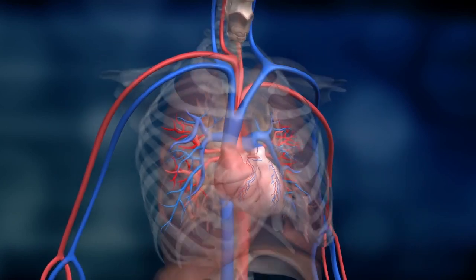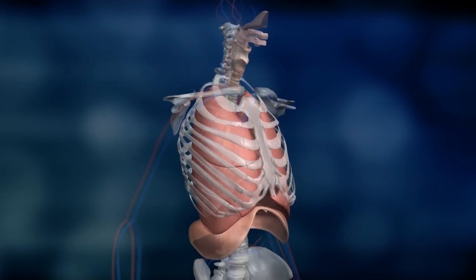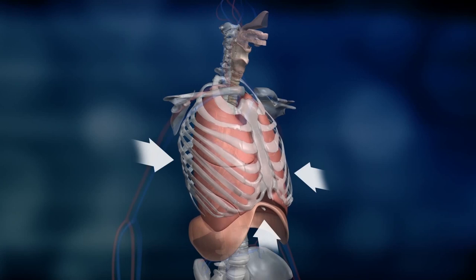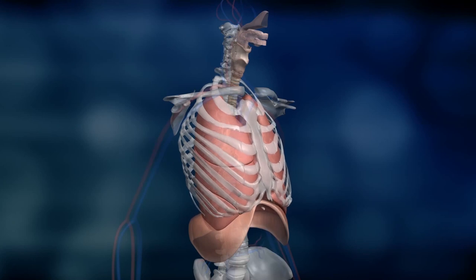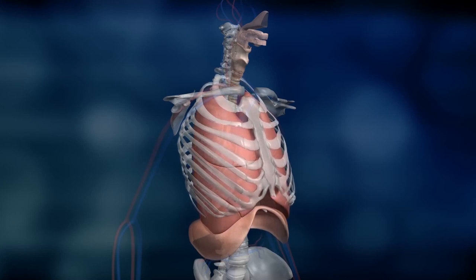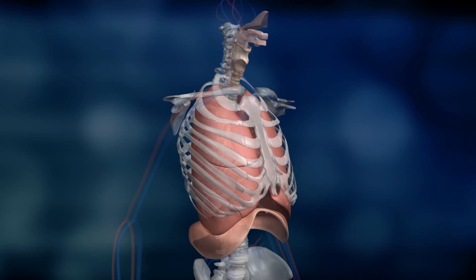When exhaling, the diaphragm and ribcage muscles relax again. This in turn reduces the size of the chest cavity. The carbon dioxide rich air is forced out of the lungs and back into the ambient air through the mouth and nose.